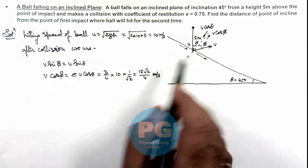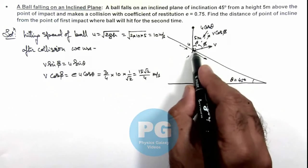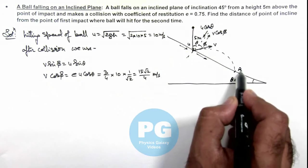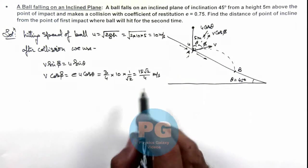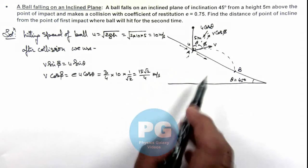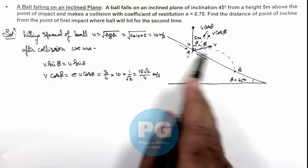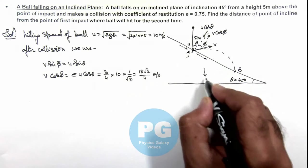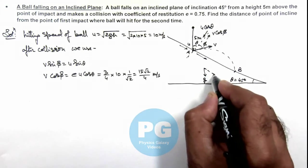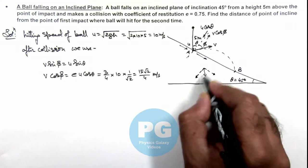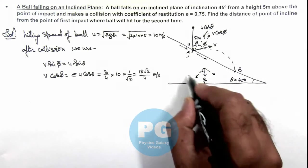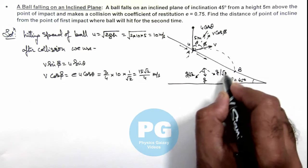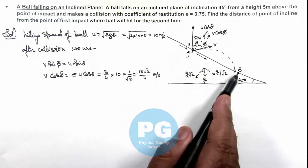In this situation, it now follows a projectile motion and finally lands somewhere at point B. If it strikes initially at point A, to calculate the range we need to first find the time of flight. For this projectile, g also has two components: g/√2 normal to the incline and g/√2 along the incline.